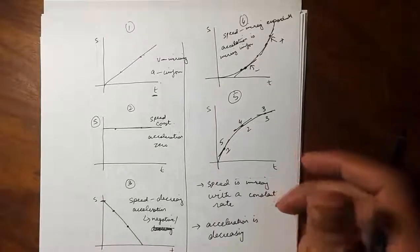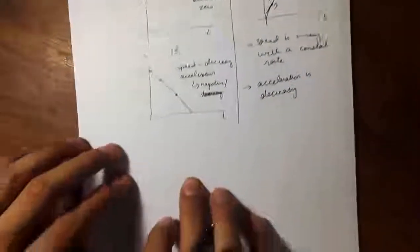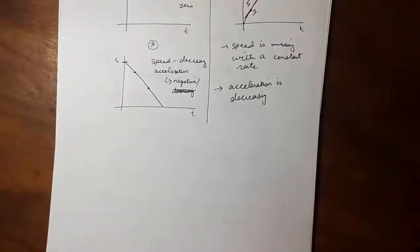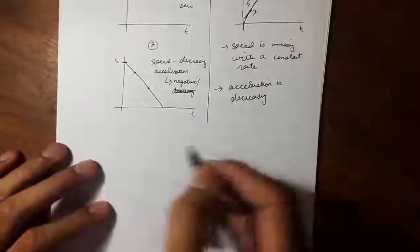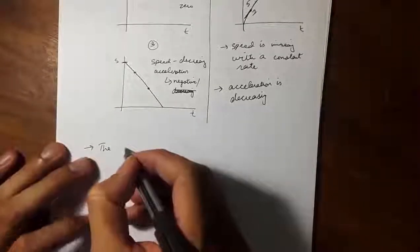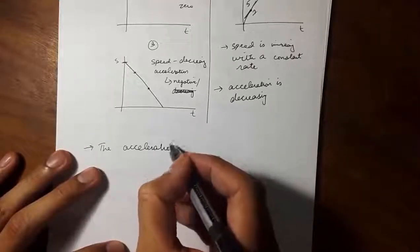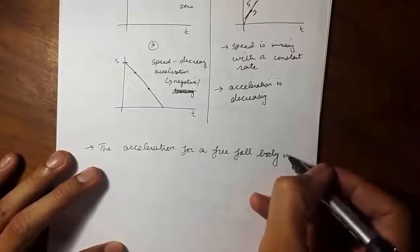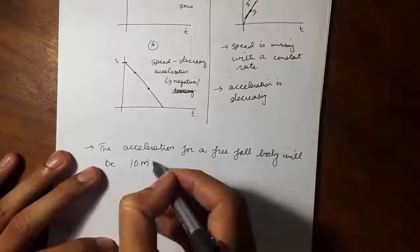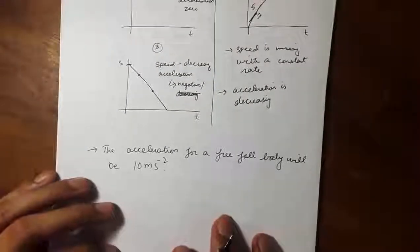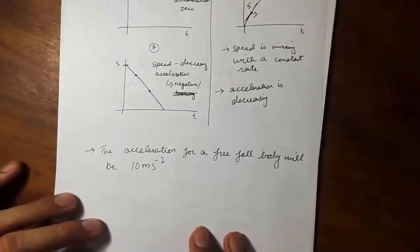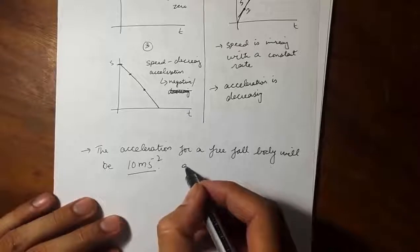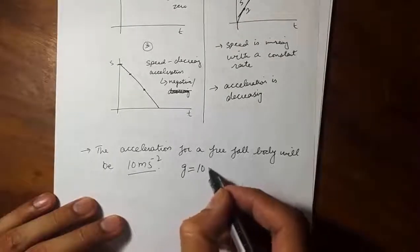Now, what is the acceleration of a freefall body? It is very important to know this because it will be helpful in upcoming chapters. The acceleration for a freefall body will be 10 meter per second squared. In the IGCSE or O-Level physics syllabus, you have to take the value of gravitational acceleration or freefall acceleration as 10 meter per second squared. We represent this acceleration with small g, equal to 10 m/s².